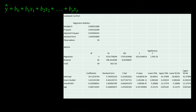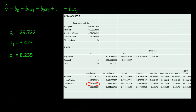First we need b0, the y-intercept. Looking at the bottom third of the output where it says Intercept and Coefficient, the number is 29.722. That is our y-intercept, b0. Now let's look for b1, the slope for variable 1, the number of hours studied, and that is 3.423. Next we need the slope for x2, overall GPA, and that is 8.235. And finally, to complete our model, we need the slope for the age variable, and that is 0.3607.